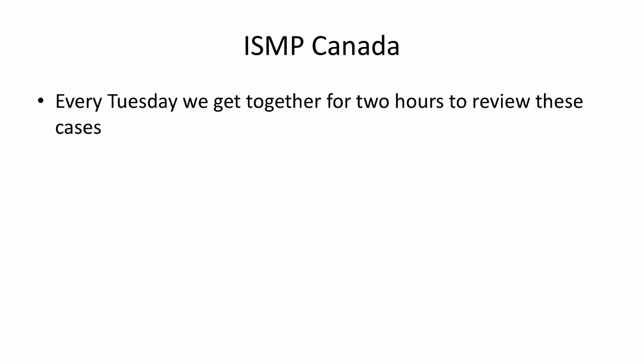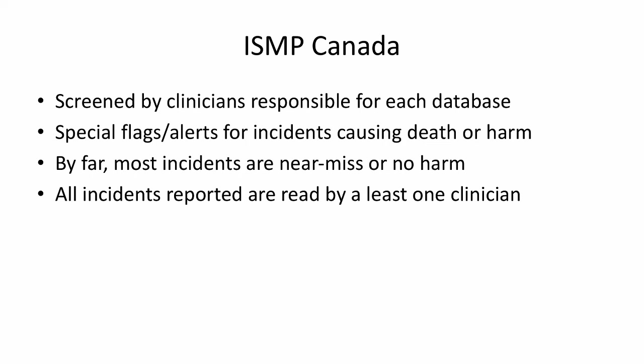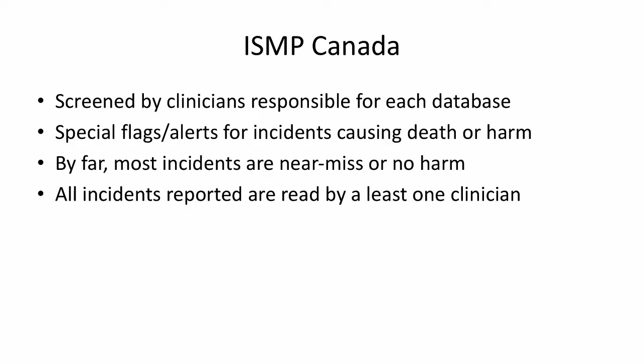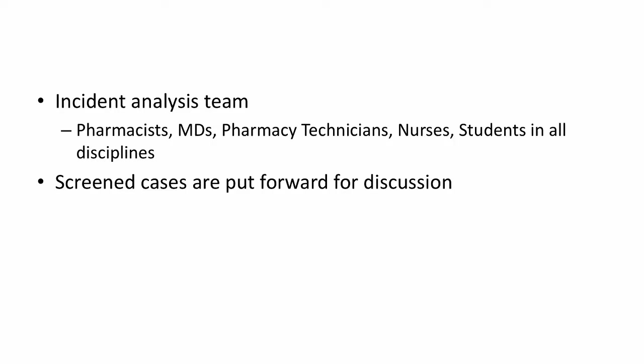Every Tuesday our analysis team meets for a couple of hours to review new cases from the preceding week. Each case is reviewed by someone with clinical knowledge who still works in healthcare — whether a pharmacist, nurse, physician, or pharmacy tech. Our system is set up to automatically highlight death cases or severe harm cases. Most incidents don't cause harm — they're near misses, no harm, or very low level harm. We receive about 15,000 reports from the community pharmacy program and 5,000–7,000 from other programs — roughly 20,000 per year.